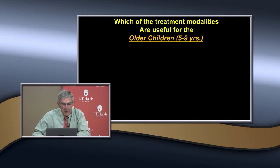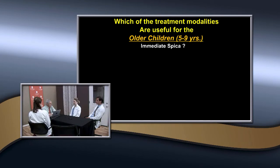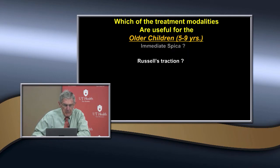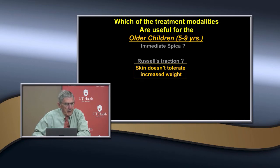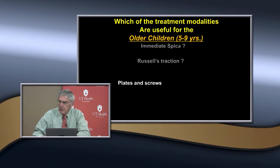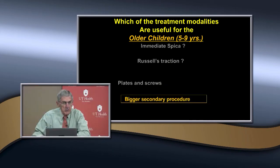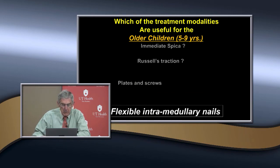For the older child, the treatment that has really changed and altered management of femoral shaft fractures is the use of flexible intramedullary nails — this has become a very popular choice. Immediate spica has a higher rate of shortening, skin traction is not tolerated at this age and weight, and plates and screws can cause up to two centimeters of overgrowth and require a large incision with subsequent plate removal.